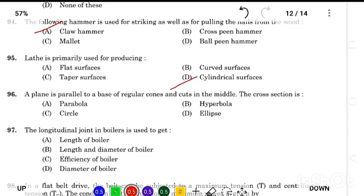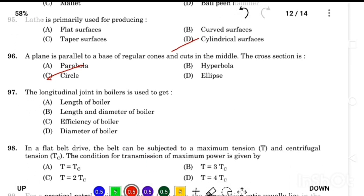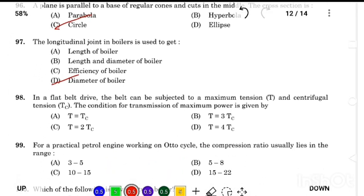A plane is parallel to base of regular cone and cuts in the middle. The cross section is Answer Option C, circle. The longitudinal joint in boilers is used to get Answer Option D, the diameter of boiler. In a flat belt drive, the belt can be subjected to maximum tension and centrifugal tension. The condition for transmission of maximum power is given by Answer Option B, T equals 3 Tc.